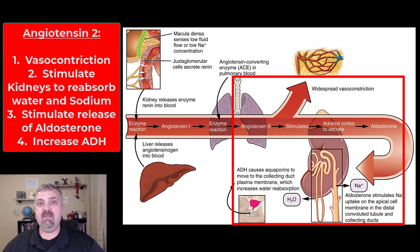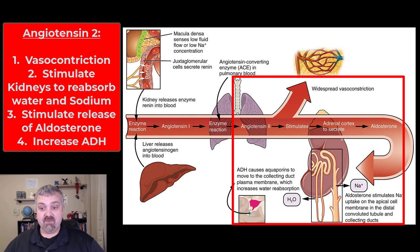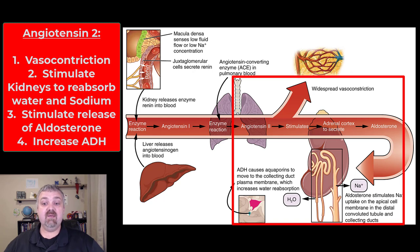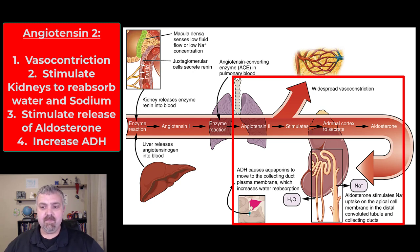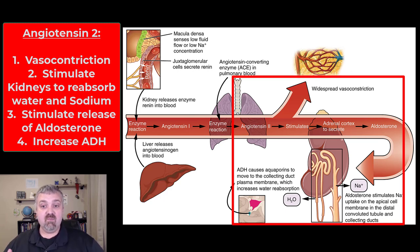The third major effect of angiotensin-2 is stimulating the adrenal cortex to release aldosterone. Aldosterone reabsorbs sodium, having water follow via osmosis. You also see an increase in ADH — antidiuretic hormone — which further reabsorbs water by opening more aquaporin water channels. Aldosterone specifically stimulates sodium uptake in the distal convoluted tubules of the kidneys and in the collecting ducts, while ADH opens those aquaporin channels leading to more water reabsorption.